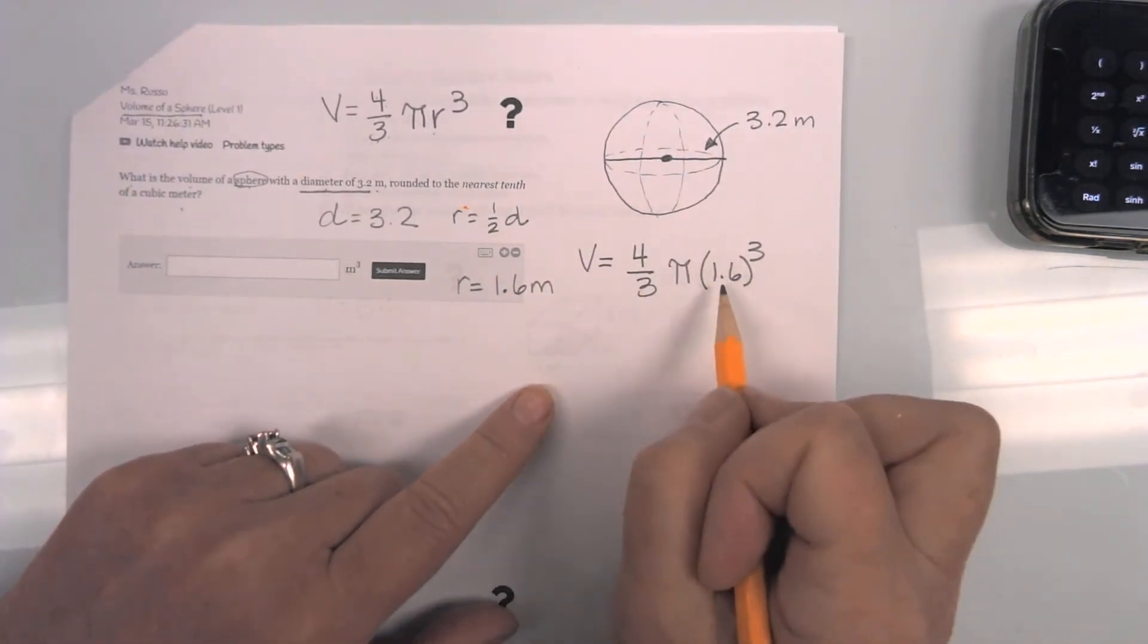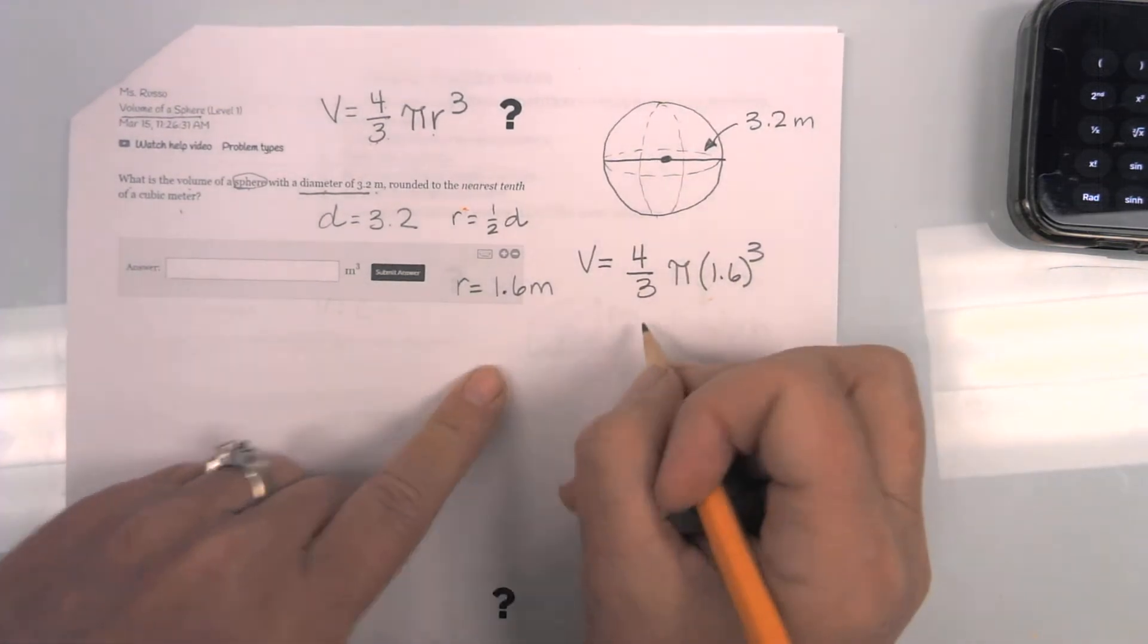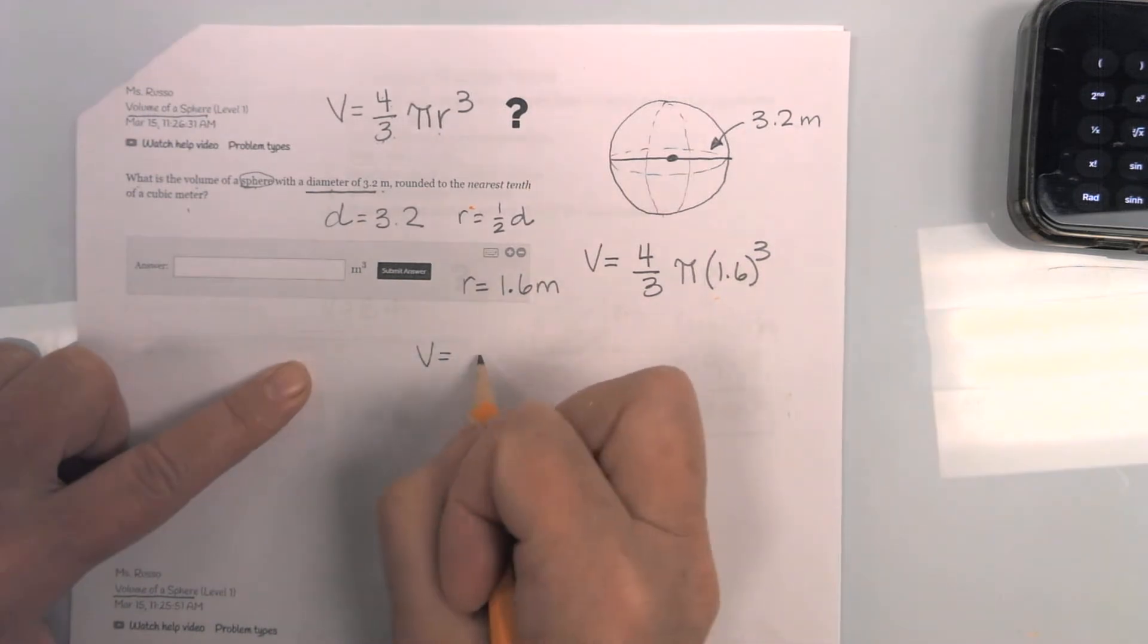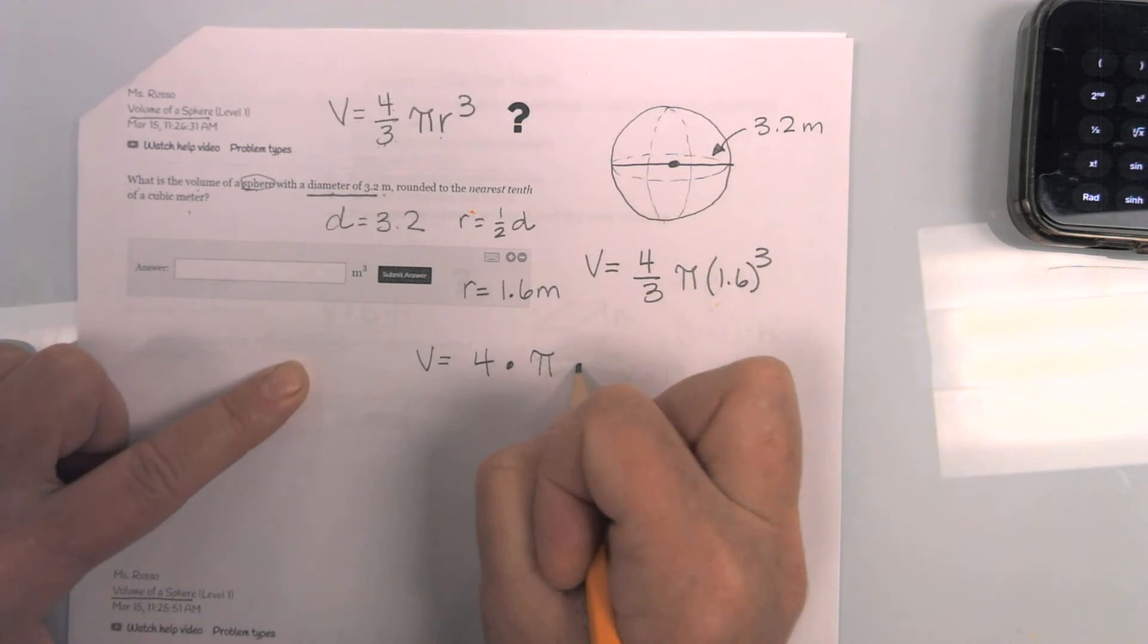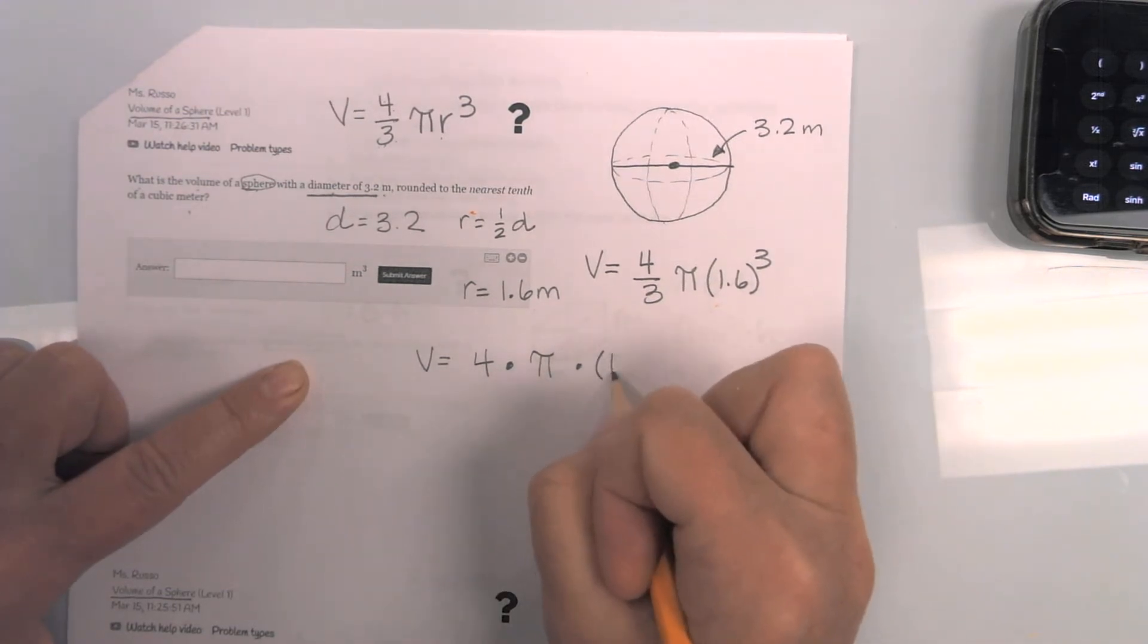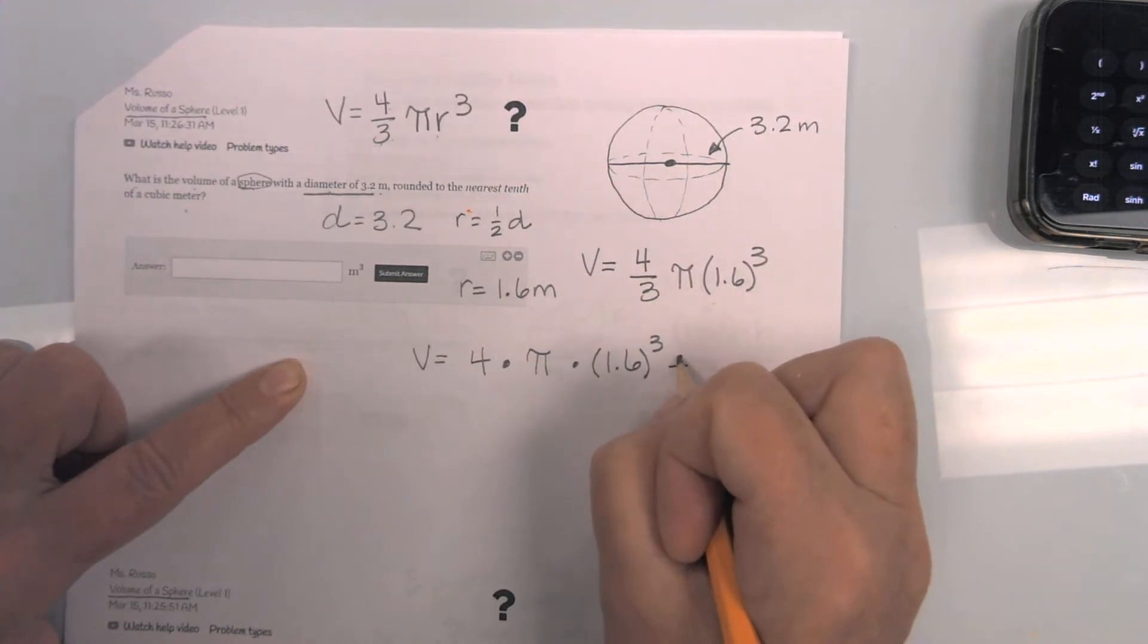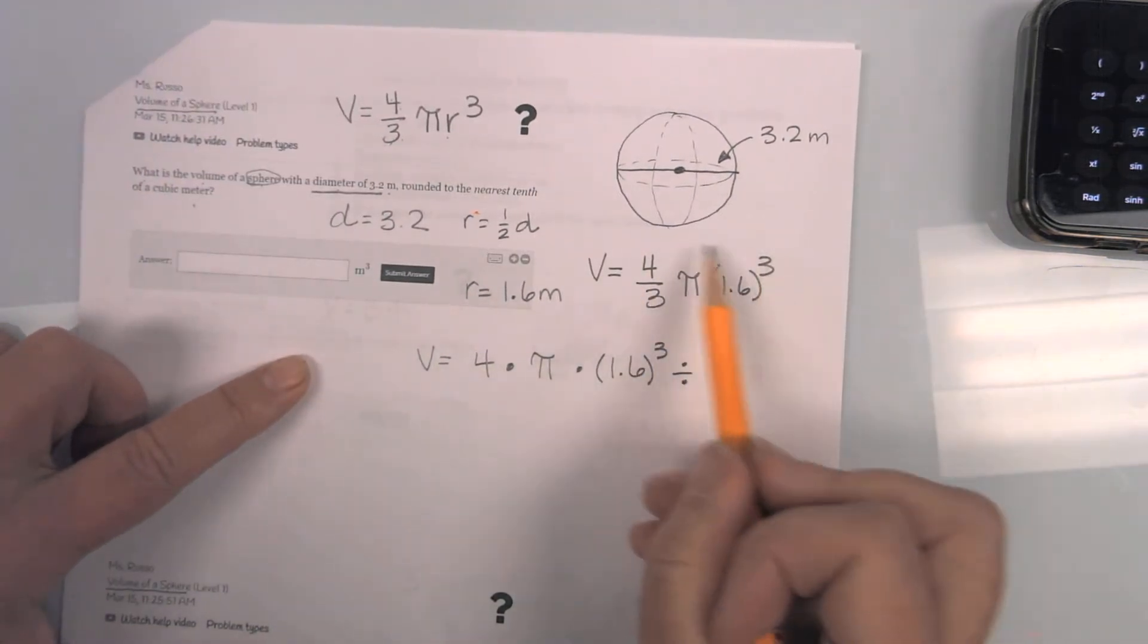Now how do we do this on the calculator? So I am going to show you in an extended version how I type this in. So to get the volume, you are going to do four. And then you are going to do times pi times 1.6. Hit the cube button.